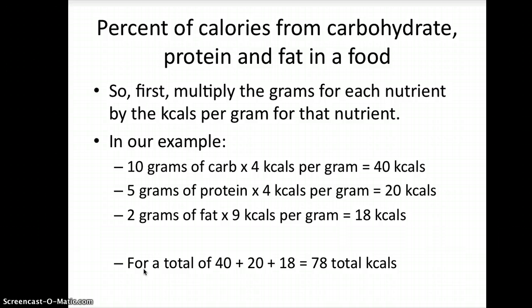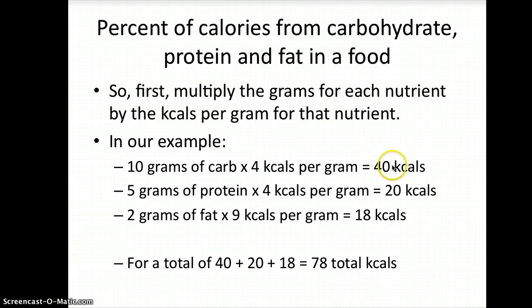The first thing you'd want to do is multiply each of those nutrients times the calories per gram. So in our example, we had 10 grams of carbohydrate, and we know that each gram has 4 calories. So 10 grams times 4 calories equals 40 calories from carbohydrate.